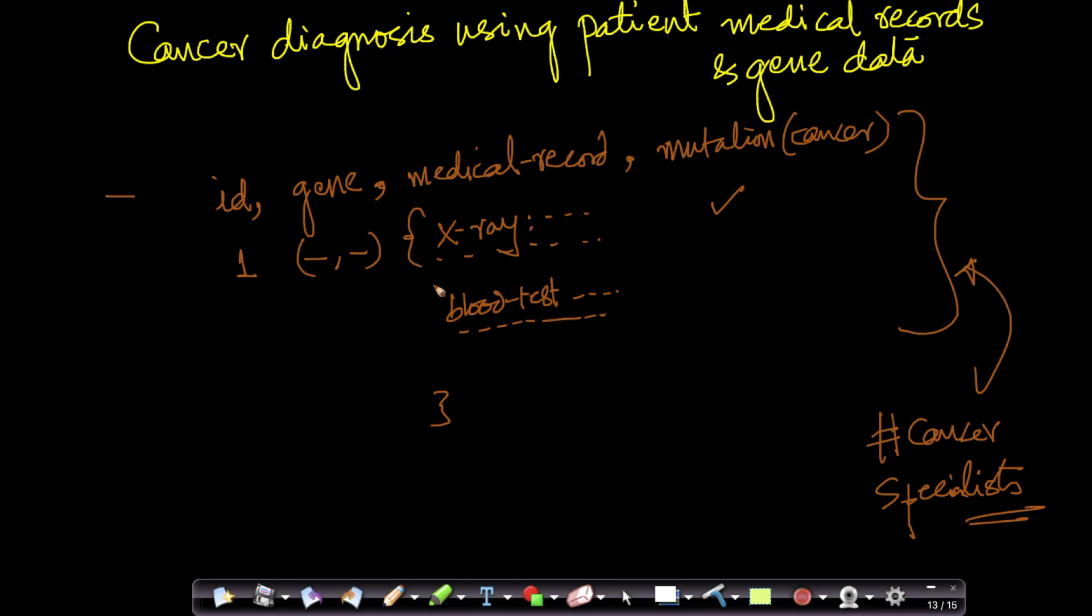Imagine if I can build a machine learning system where if you give me the gene variations and the medical record, I can predict what type of cancer the patient has very fast, instead of taking hours that a human would take. Imagine if I can do this in minutes or even seconds with high accuracy.